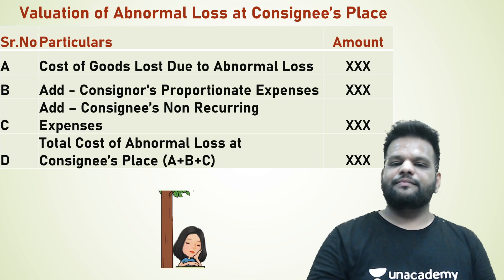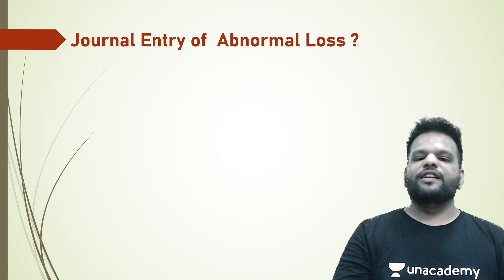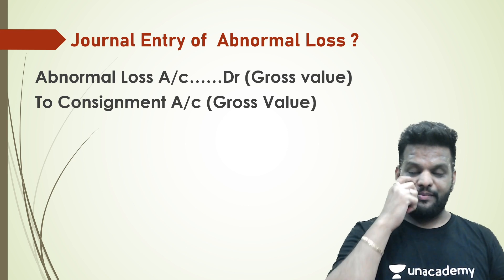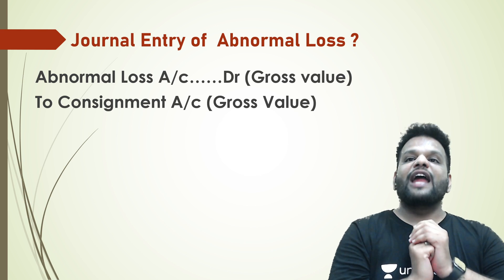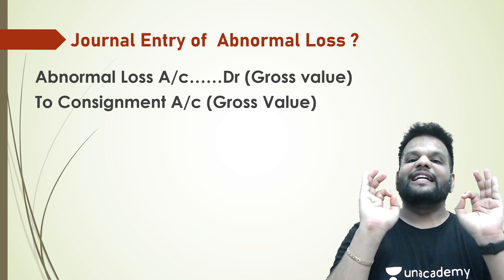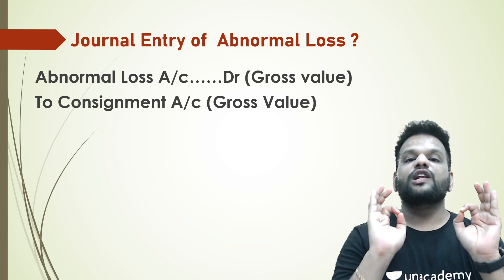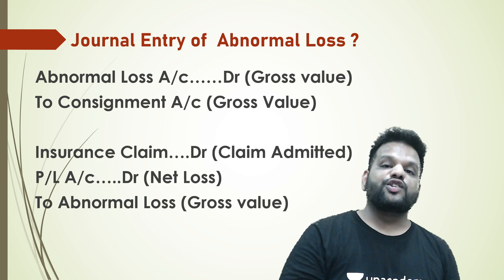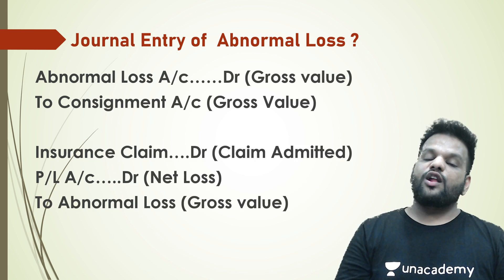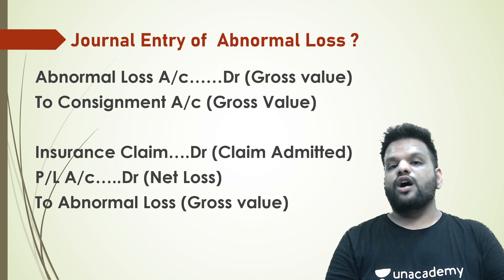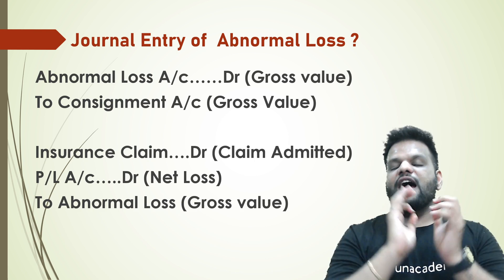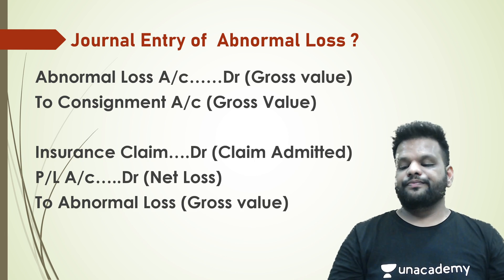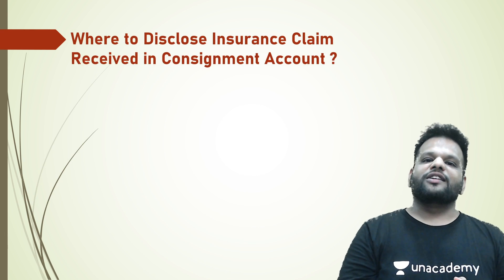What will be the journal entry? First entry: Abnormal Loss Account Dr. to Consignment Account — we credit the Consignment account with the full value of abnormal loss. Second entry: Insurance Claim Account Dr., Profit and Loss Account Dr. to Abnormal Loss Account — the net effect of abnormal loss is given to the debit side of the Profit and Loss account.